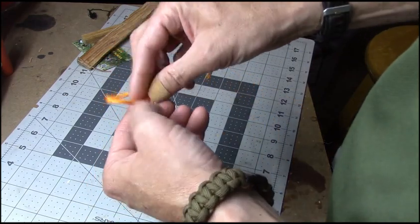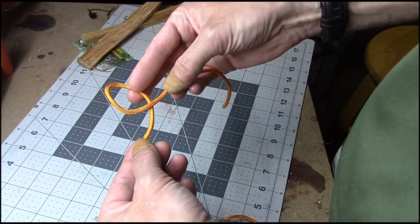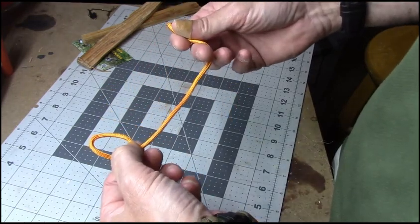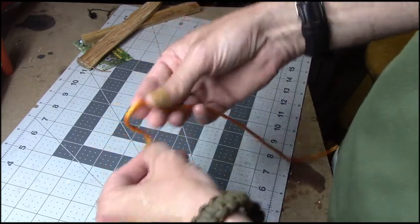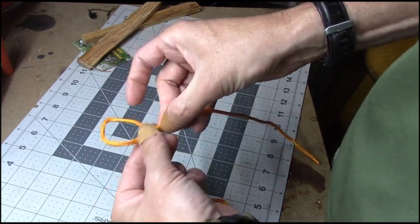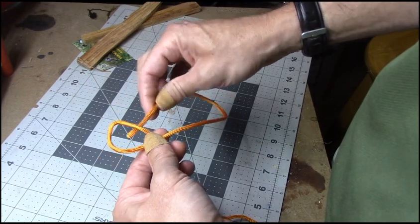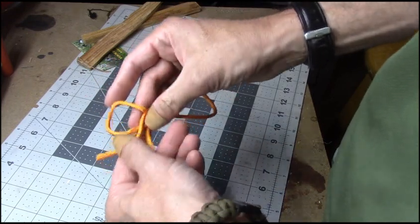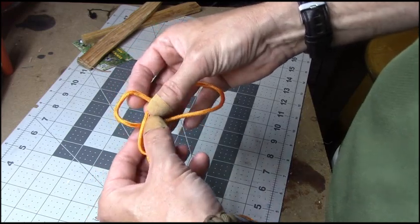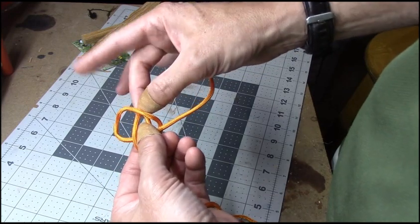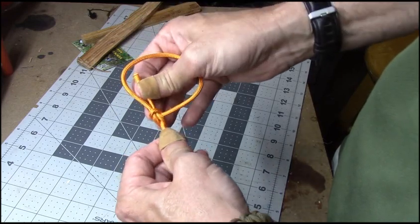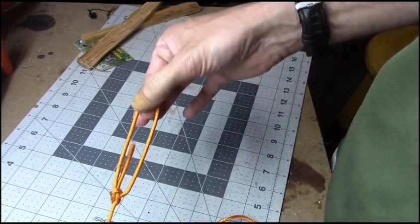First thing you're going to do is you're going to make a loop. Just like that. A fairly small loop. Then you're going to take your tag end. Let's get myself a little bit more here. Alright. There's our loop. You're going to take your tag end, run it through the loop, around the back side of the standing end, and then back through that original loop. Then you're going to take these two pieces right here, this one and the tag, and pull tight. A little extra on your tag end. And that's your bowline.